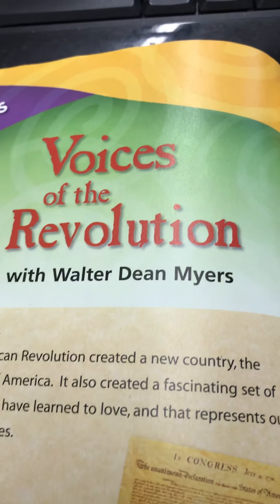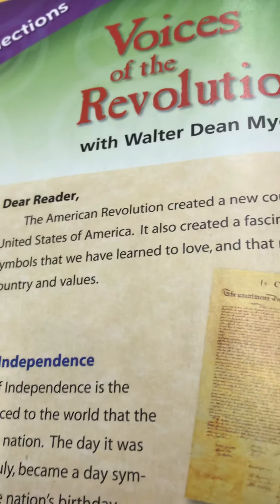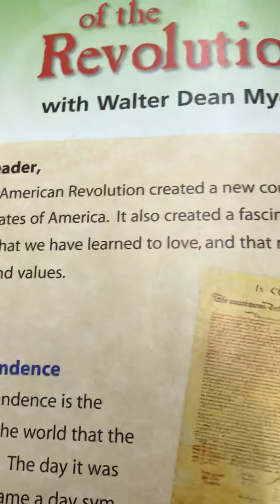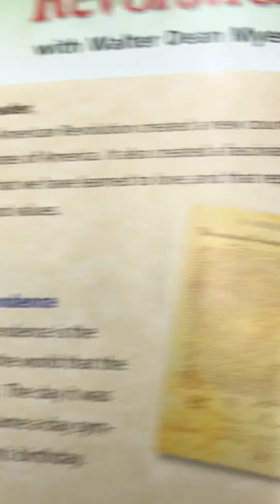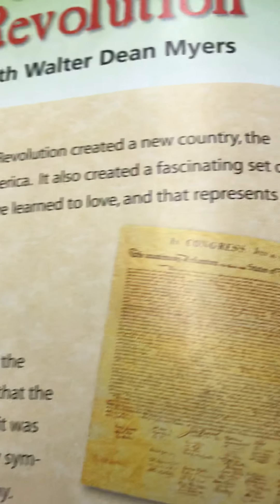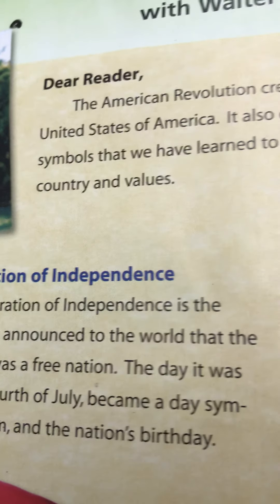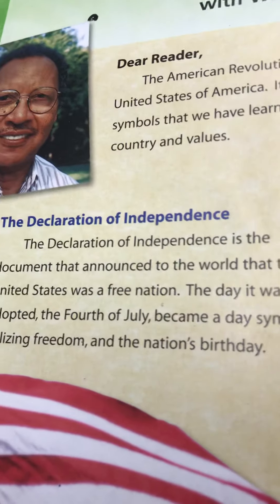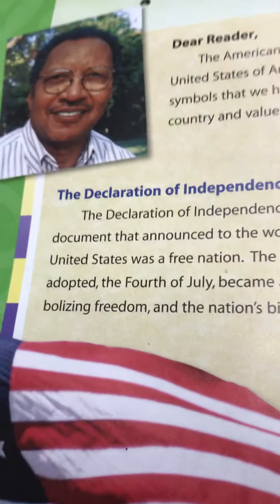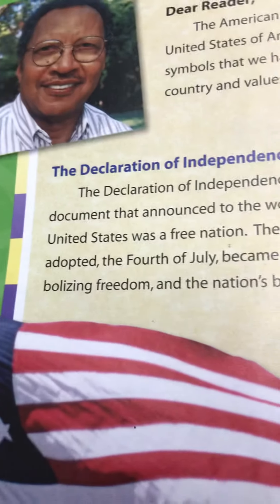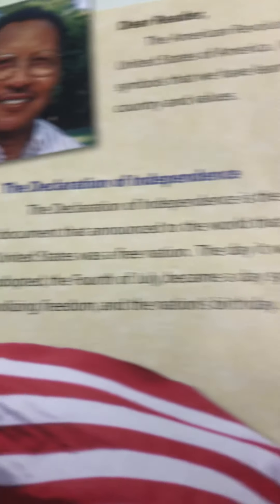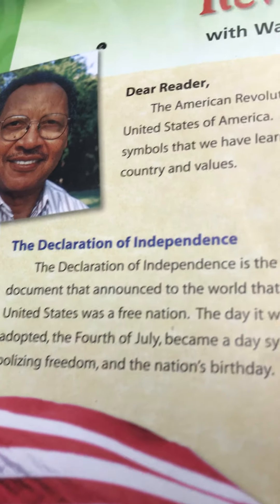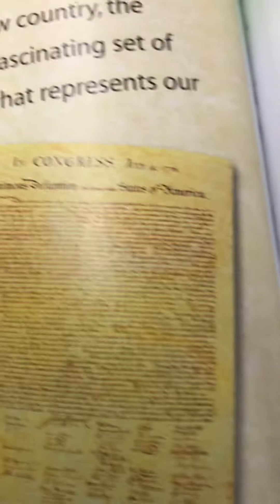Voices of the Revolution with Walter Dean Myers. Dear reader: The American Revolution created a new country — the United States of America. It also created a fascinating set of symbols that we have learned to love, and that represent our country and values. The Declaration of Independence is the document that announced to the world that the United States is a free nation. The day it was adopted, the 4th of July, became a day symbolizing freedom and the nation's birthday. Hope we know that — we've been studying it.